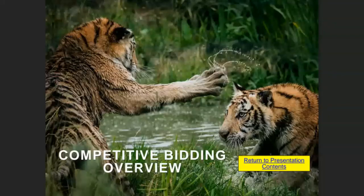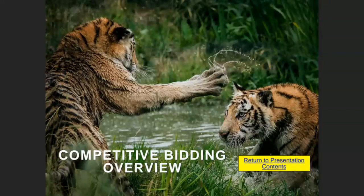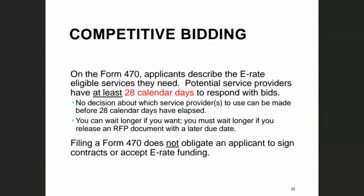Let us talk about competitive bidding. Competitive bidding is one of the core tenets of the E-Rate program because it's intended to help drive prices down by giving applicants like schools and libraries multiple options. Libraries file a Form 470, which is where you have requests for services to let vendors know what E-Rate eligible items your library is going to need in the upcoming funding year. After you file a Form 470, you're giving vendors at least 28 calendar days to respond with bids.